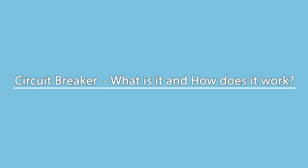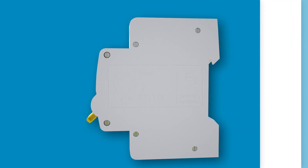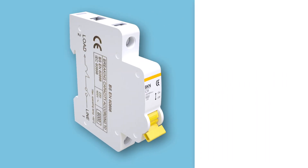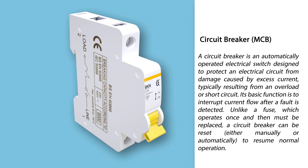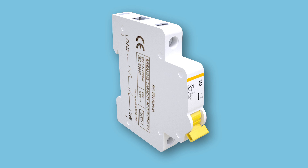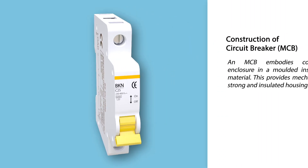A circuit breaker is an automatically operated electrical switch designed to protect an electrical circuit from damage caused by excess current, typically resulting from an overload or short circuit. Its basic function is to interrupt current flow after a fault is detected. Unlike a fuse, which operates once and must be replaced, a circuit breaker can be reset either manually or automatically to resume normal operation.